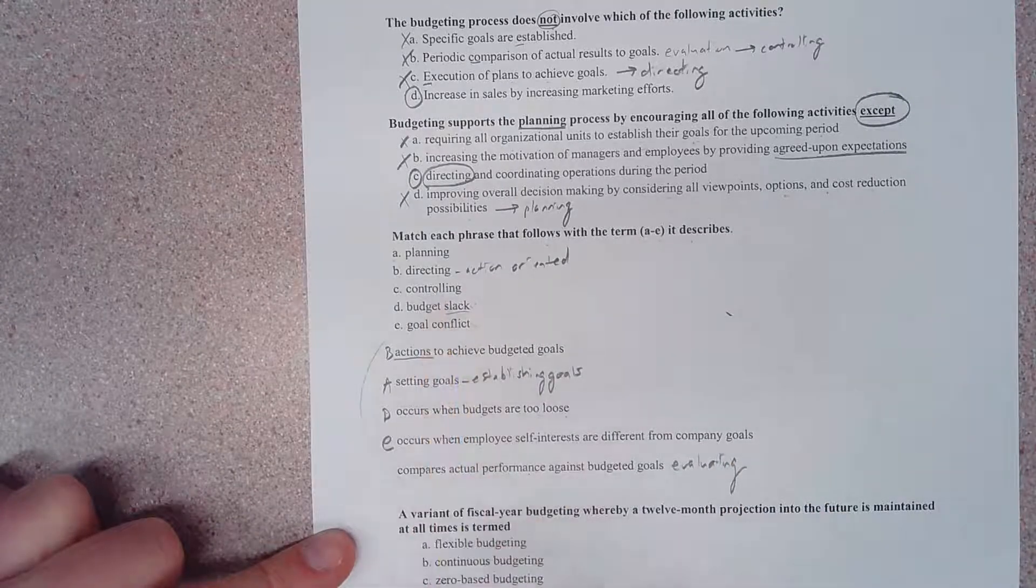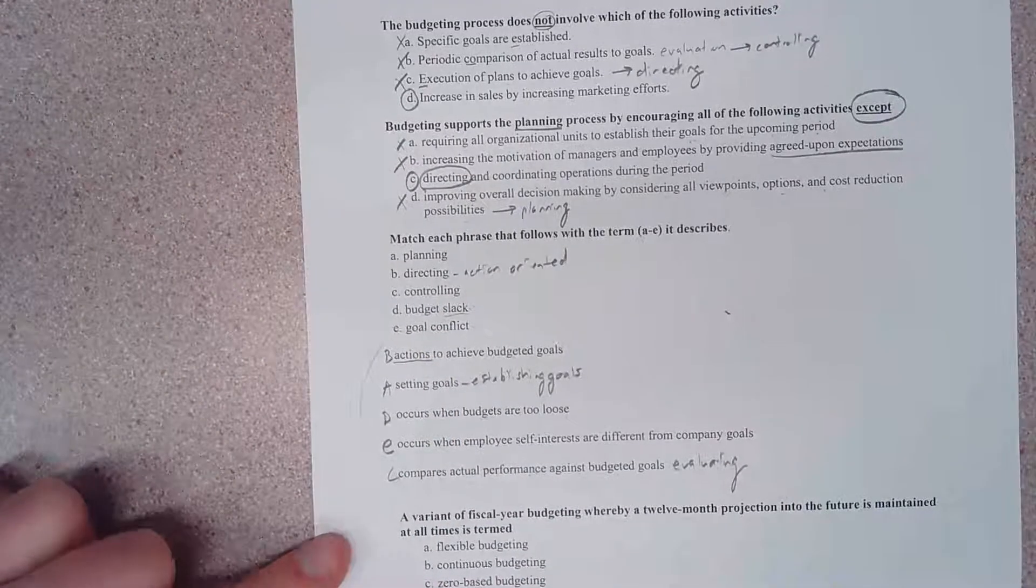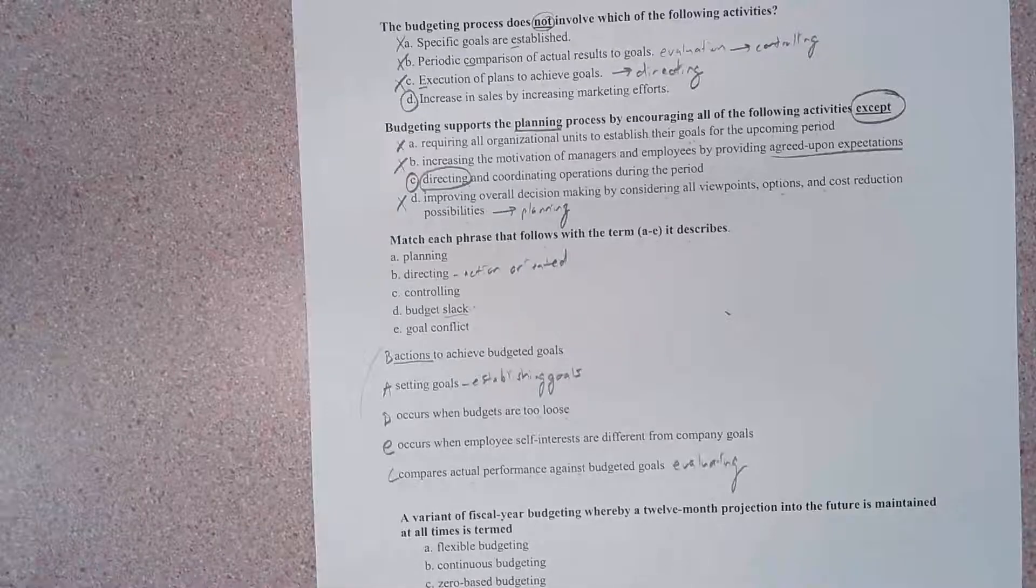This is part of the controlling process. So there we have it: B, A, D, E, and C. We'll pick up with the rest of these in another video.